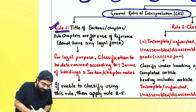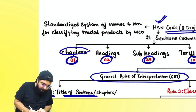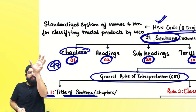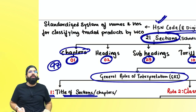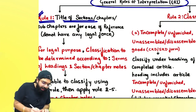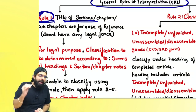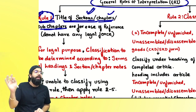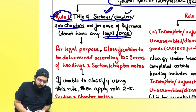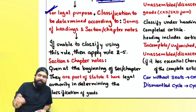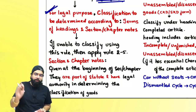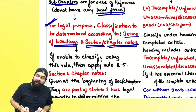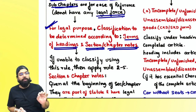Rule number one says the title of the section — all 97 chapters are classified into 21 sections. The section will have chapters and chapters help find your correct classification. Rule number one tells you that the name of the section, chapter, or sub-chapter are only for ease of reference — they don't have any legal force. For legal classification, you must always classify by reading the terms of the heading and section or chapter notes, because they are legally part of the statute.